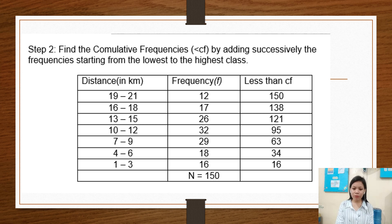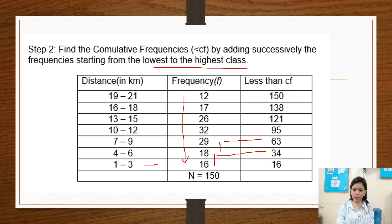Step 2: Find the cumulative frequencies by adding successively the frequencies starting from the lowest to the highest class. We start from the distance 1 to 3. So, 16 plus 18 equals 34; 34 plus 29 equals 63; 63 plus 32 equals 95; 95 plus 26 equals 121; 121 plus 17 equals 138; and 138 plus 12 equals 150.